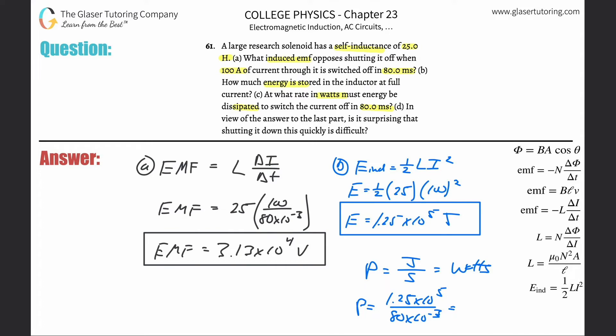So this is going to be divided by 80 times 10 to the minus 3, and is about 1.56, so 1.56 times 10 to the 6, and that is in then watts. Okay, it's about one and a half megawatts.